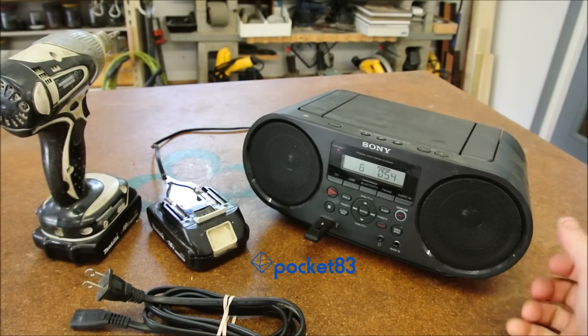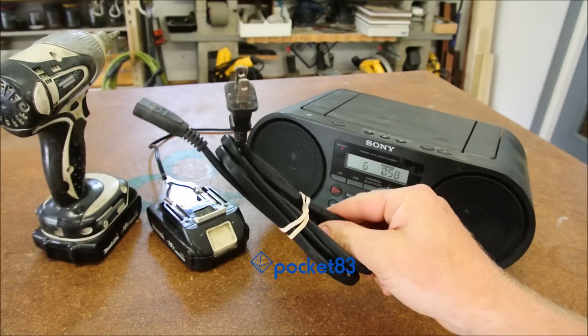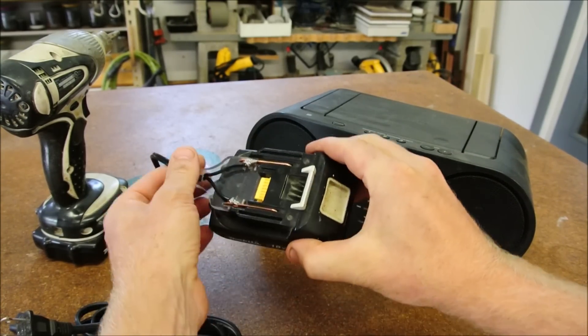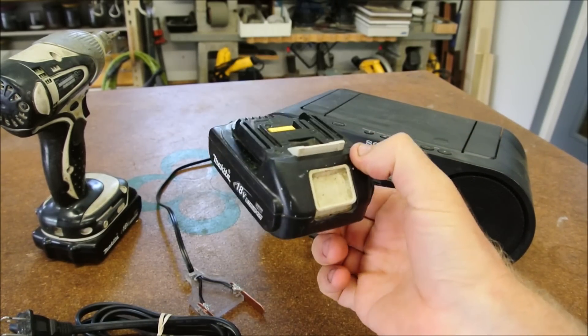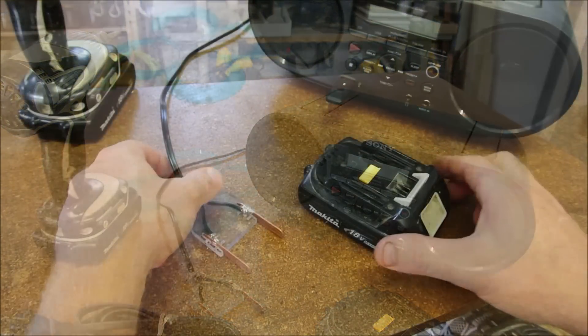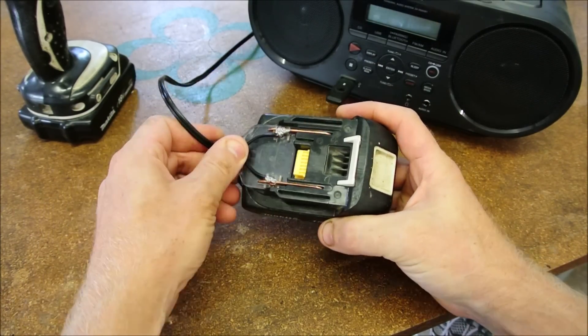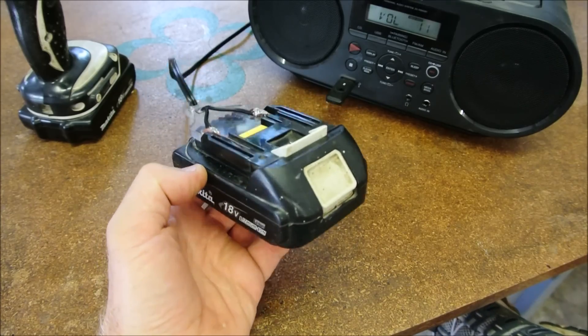This little boombox has been floating around my shop for the better part of a decade, and it normally plugs into the outlet just like anything else. But I've converted it to run off of my battery drill batteries, giving it an auxiliary plug like this for direct current. I wouldn't exactly call it easy, but it's incredibly useful.